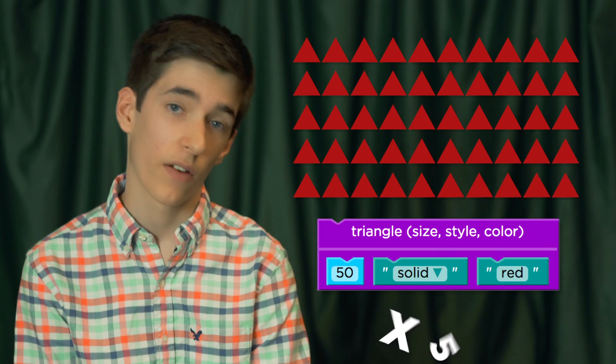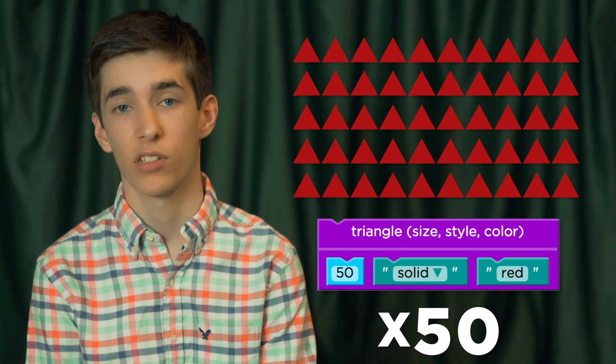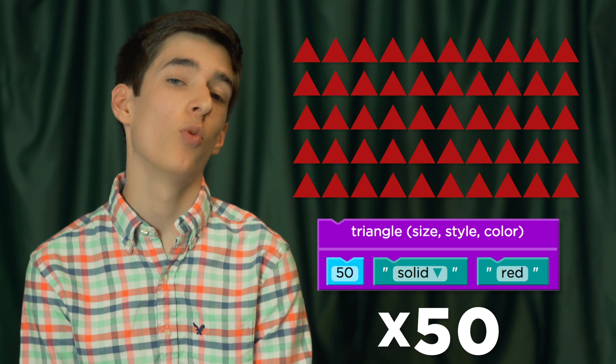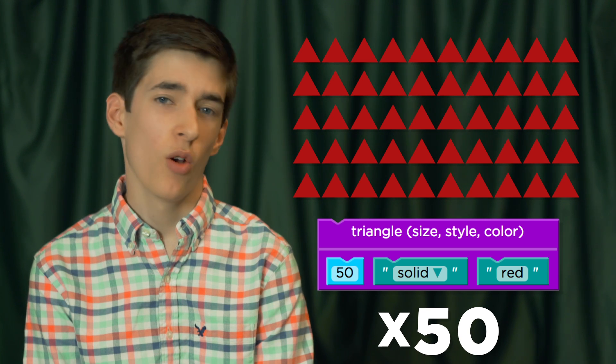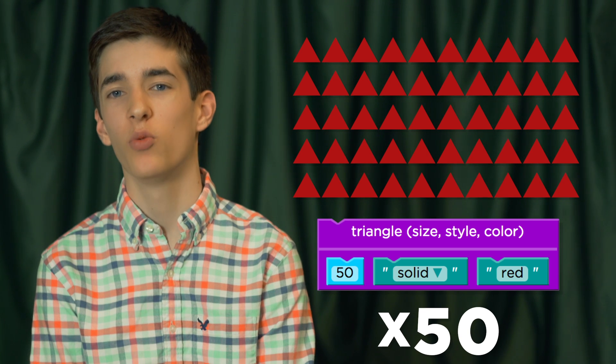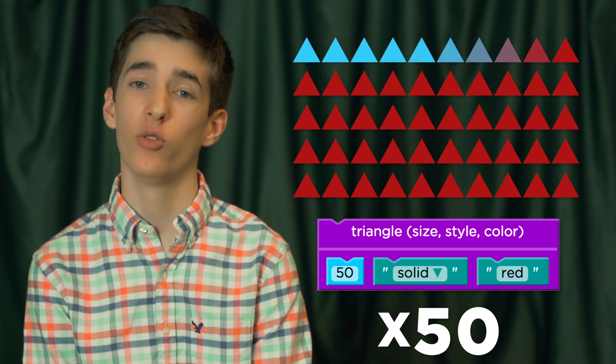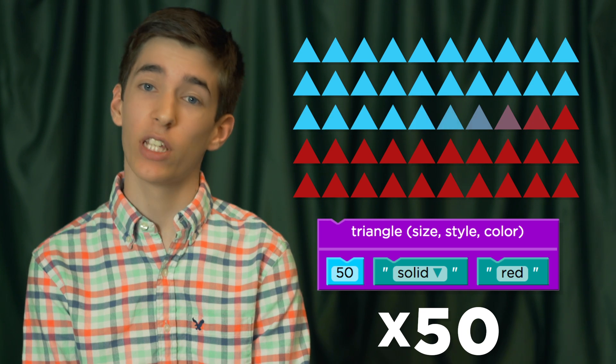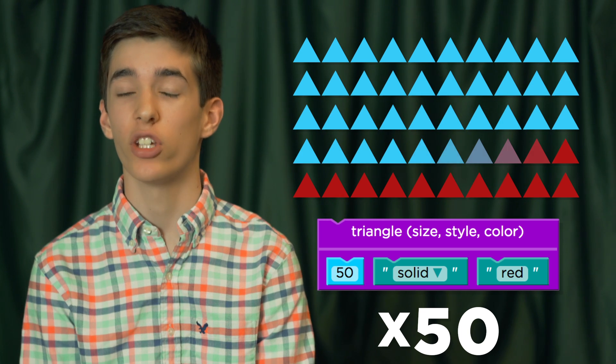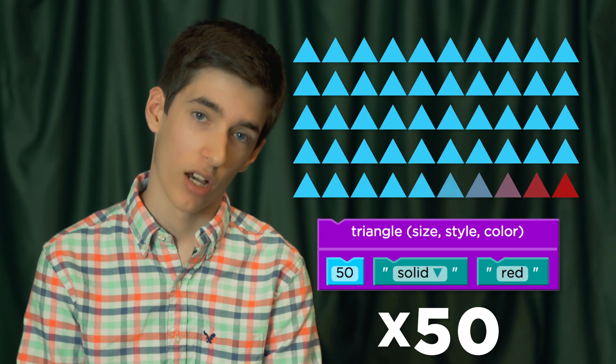Suppose we want to make an image with 50 identical solid red triangles. To do so, you have to create this evaluation block 50 times. Even worse, what if you decided you wanted 50 blue triangles instead? You'd have to go through and change each and every block.